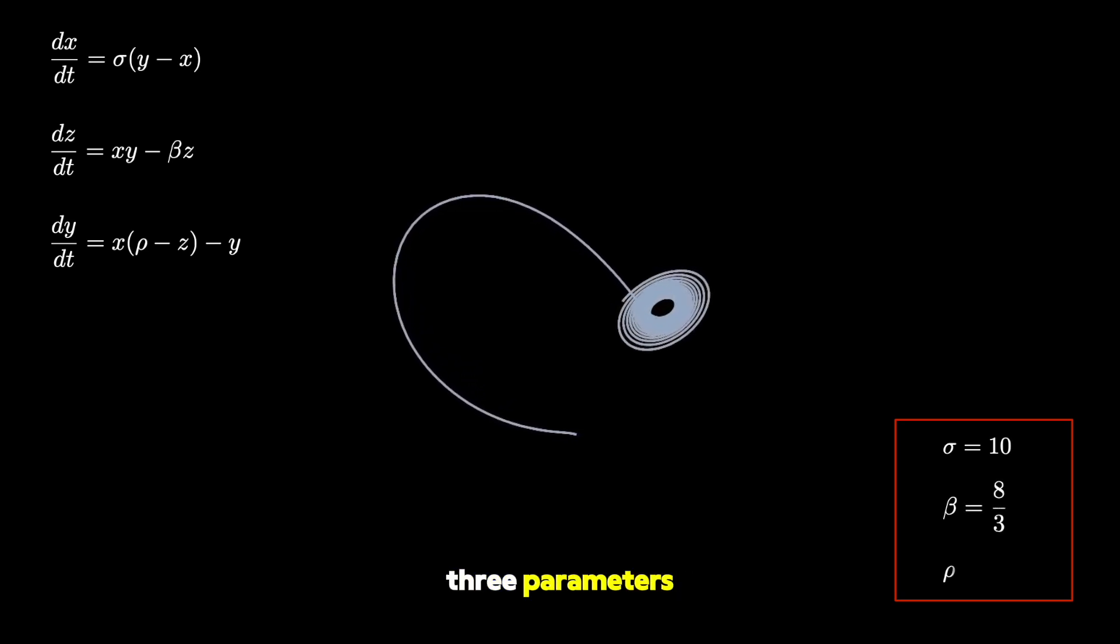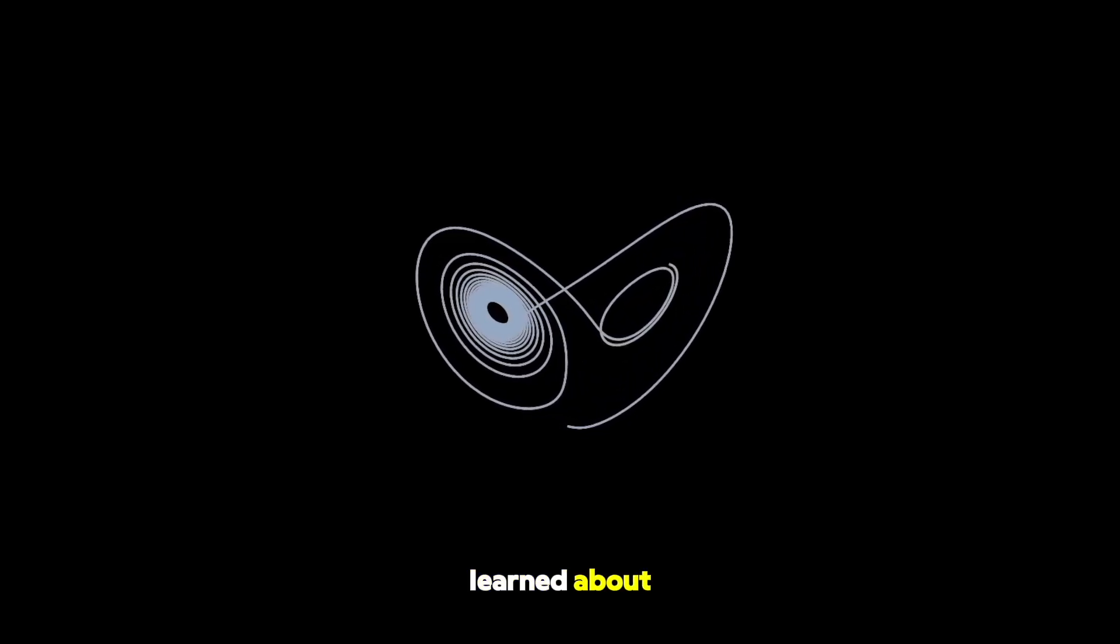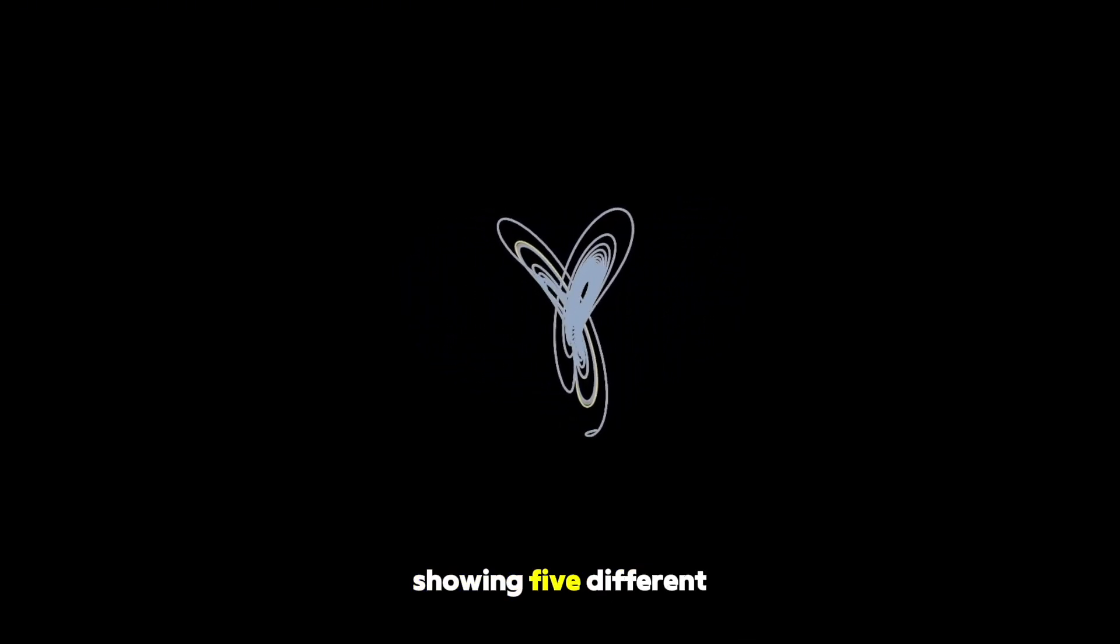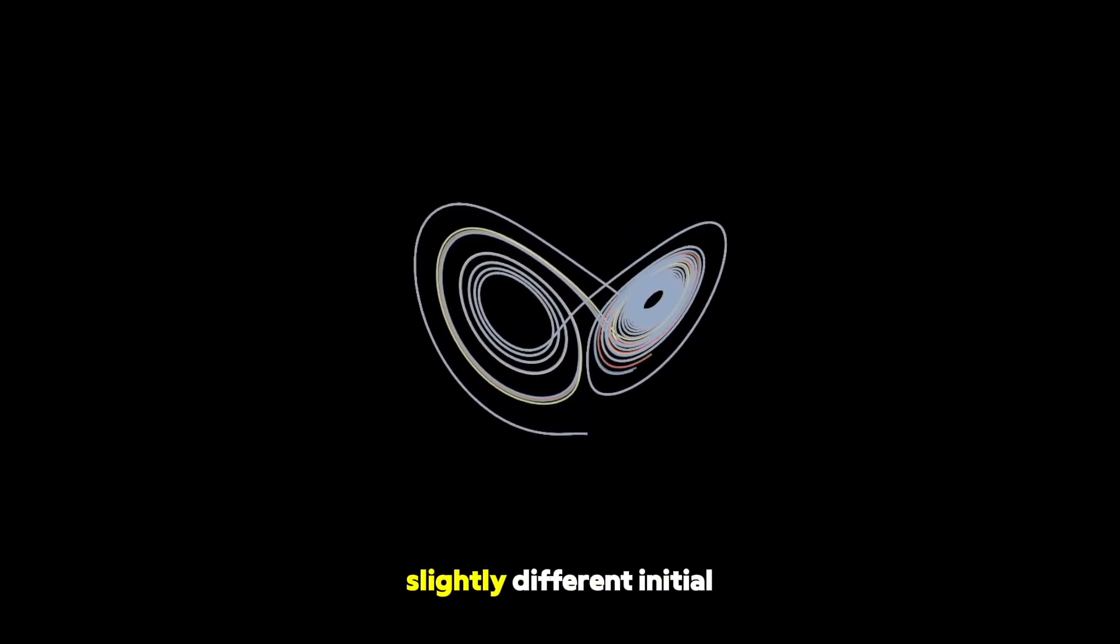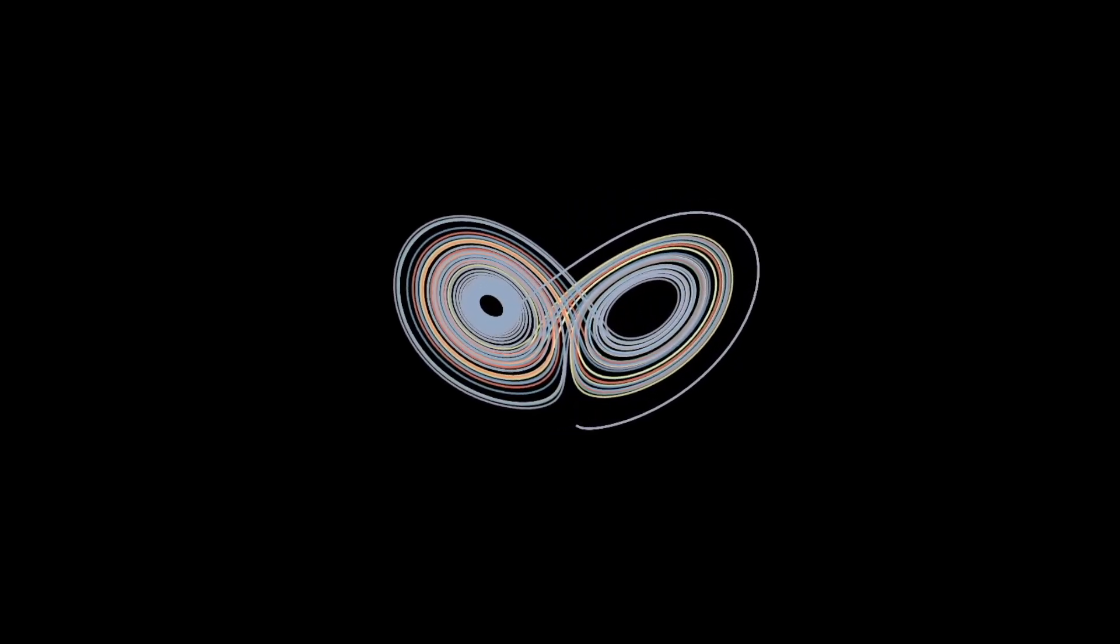Specifically for these three parameters, the model satisfies the two criteria for being chaotic that we just learned about. And although this looks like just one curve, here I'm in fact showing five different curves that began with slightly different initial conditions. And you can see that their paths diverge drastically as the system evolves.